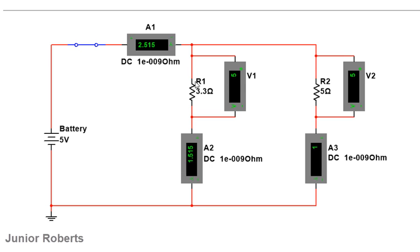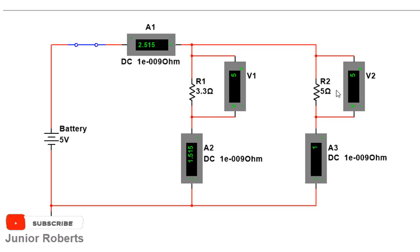Looking at the potential difference across each resistor, we notice that the PD across R1 is 5 volts and the PD across R2 is also 5 volts. The voltage from the battery remains the same for both parallel arms. Since these resistors are in parallel, they receive the same voltage. We have 5 volts from the source, giving a PD of 5 volts dropped across R1 and also 5 volts dropped across R2. In a parallel circuit, the current is shared between the branches while the PD is the same across all branches.